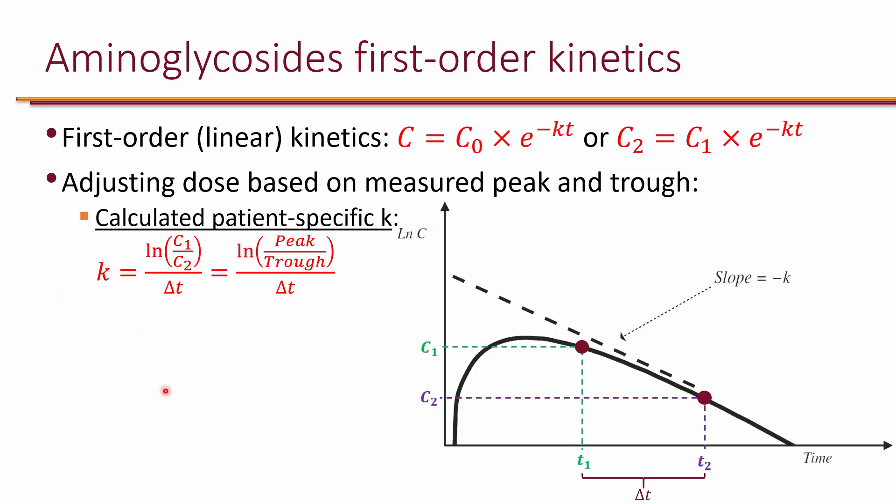And what makes this different is that this is actually the K in your patient. The K that we calculated previously was from population kinetics. So we were just estimating what the K would be in your patient. In this case, because we're actually getting levels in your patient, we're calculating the K specifically in that patient. So this is referred to as individualized kinetics, as opposed to population kinetics.